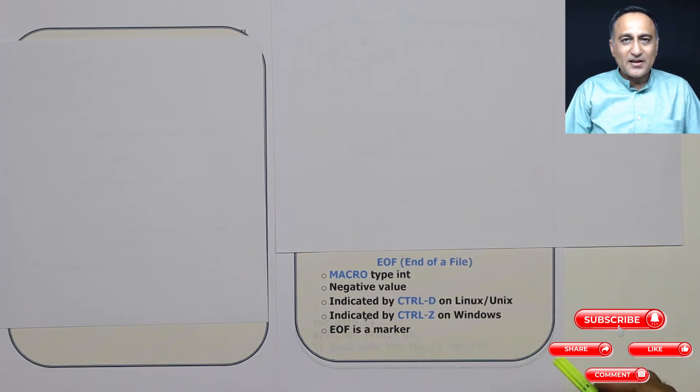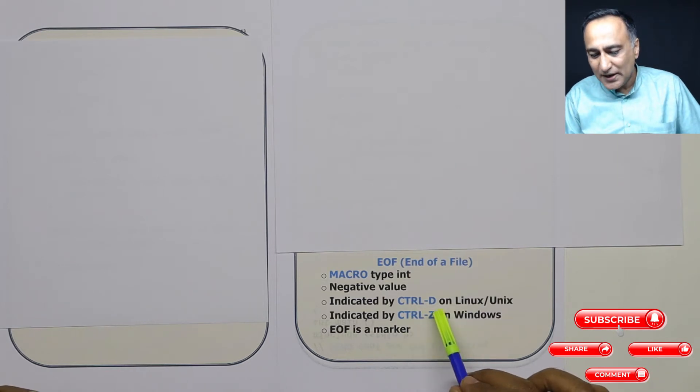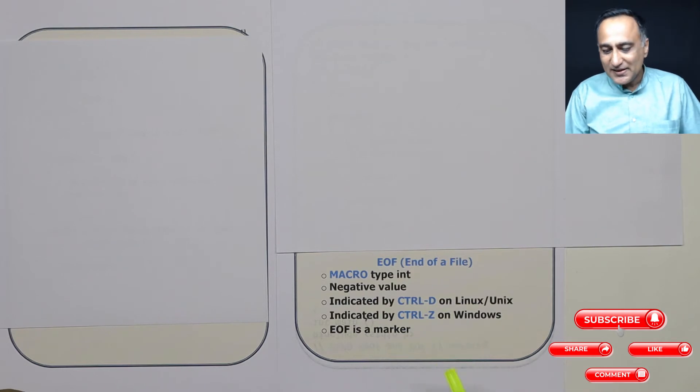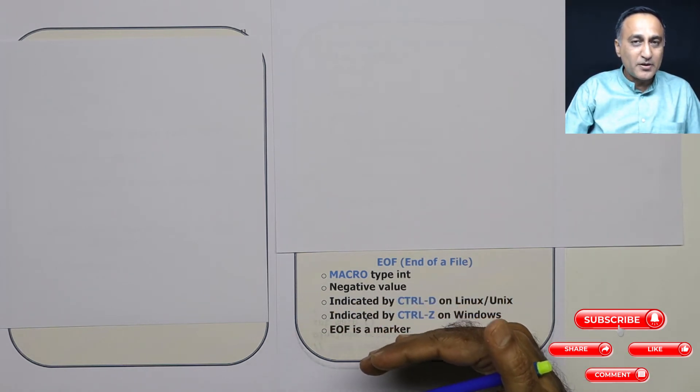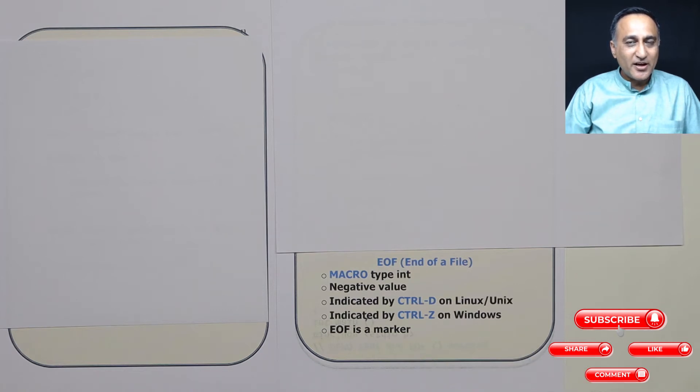The end of the file is after this R. So after this R, if I have a special character, that special character is known as end of the file marker. For example, if I am on Unix and Linux, the end of the file marker is Ctrl and D. On Windows, it is Ctrl Z that indicates the end of input or end of file.